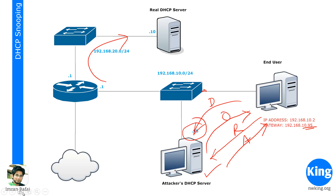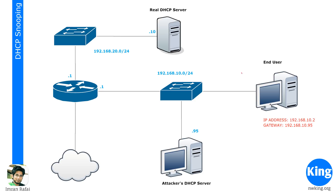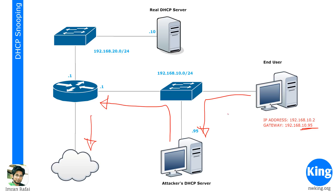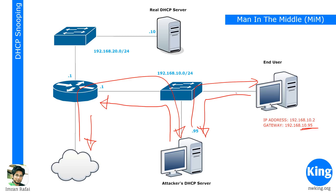What this does is all traffic from the end user going to the internet would first come to the attacker's device, because according to the assigned IP address, the attacker is the gateway. The attacker's PC would then take the traffic and send it to the real gateway. For the end user there is no difference because they can still access the internet, but the traffic is going through an intermediate device. Return traffic would also go through this device. This is called a man-in-the-middle attack, because every packet going through the network for this computer is going through the attacker's computer, and he can actually read everything.